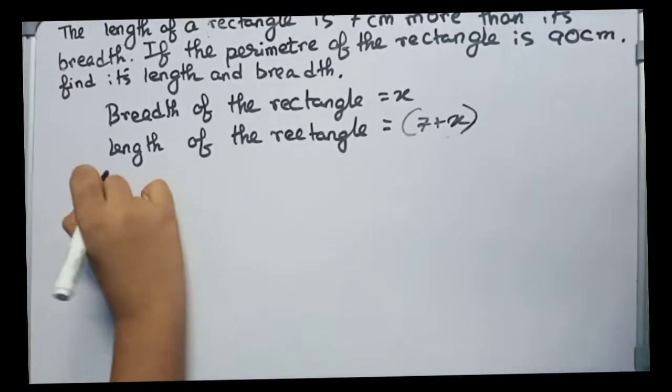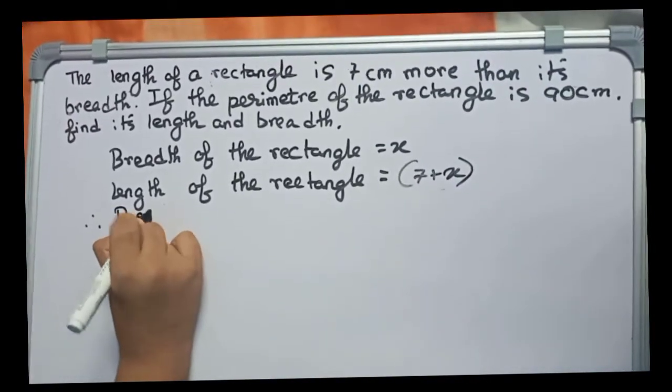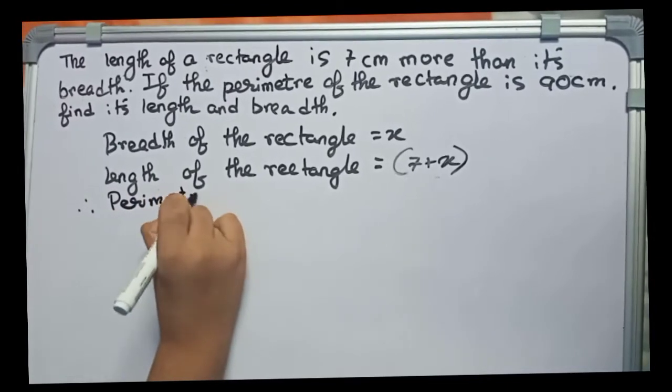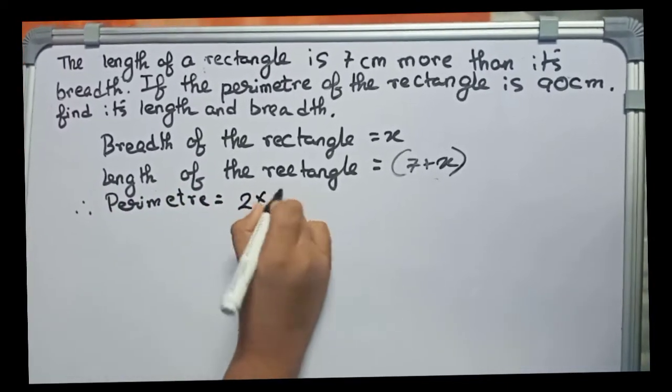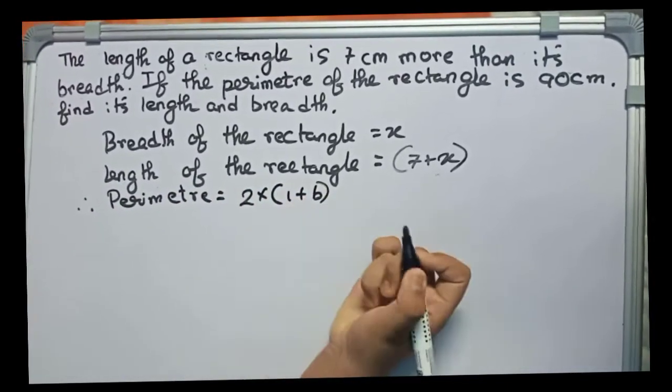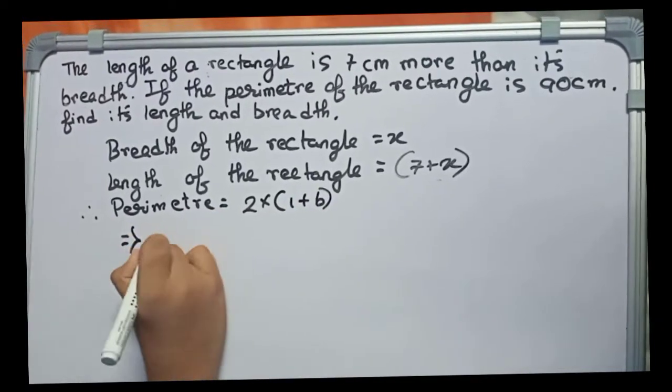Now we frame the formula. The perimeter is always 2 into length plus breadth. So now I frame the equation.